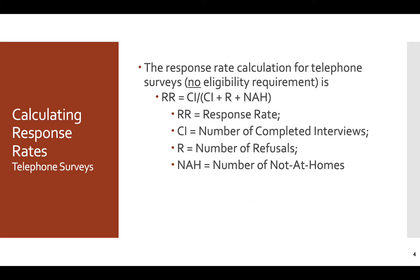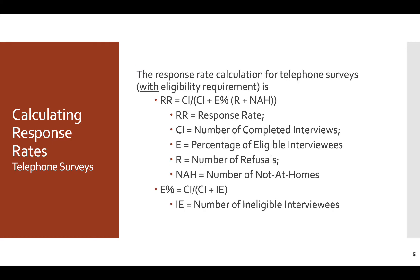Now let's talk about telephone surveys, which are a little bit different — we include a 'not at home' category. The response rate calculation for a telephone survey with no eligibility requirement is: response rate equals the number of completed interviews divided by the number of completed interviews plus the number of refusals plus the number not at home.